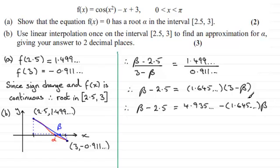Rearranging this, adding this term to both sides and adding 2.5 to both sides, gives us 2.645 and so on.